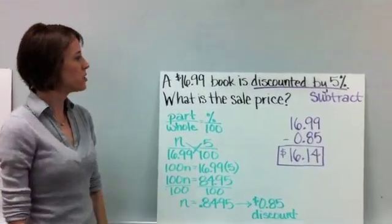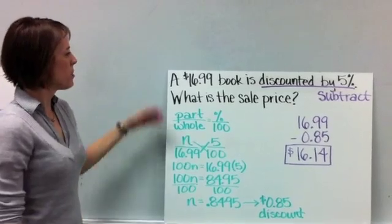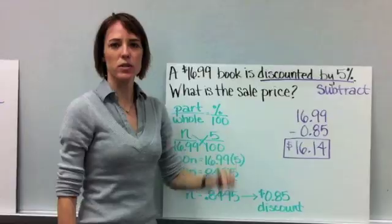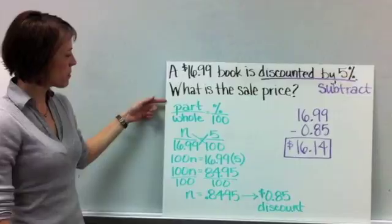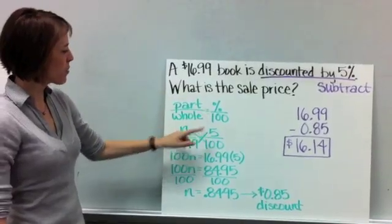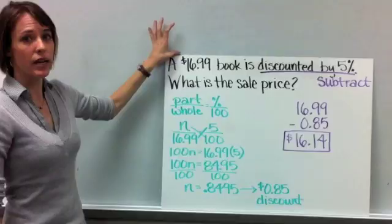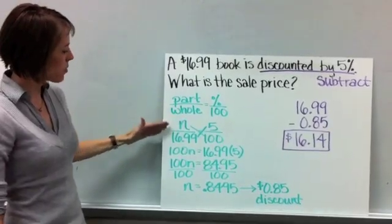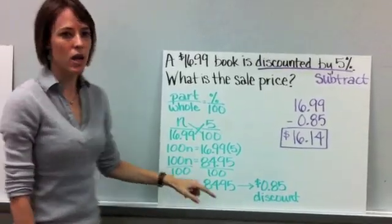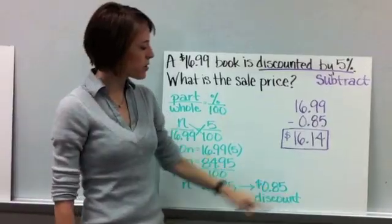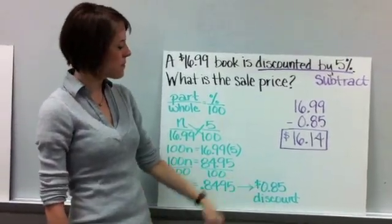Here's the solution to example number four. Remember, we're talking about a book that is discounted by 5%. So when you see the word discount, you know to subtract. So we do our percent proportion, finding out 5% of $16.99. Once you set it up, do your cross multiplication. You should have gotten n equals 0.8495. And again, we're going to round it to the nearest hundredth because we're talking about money. So it's $0.85.